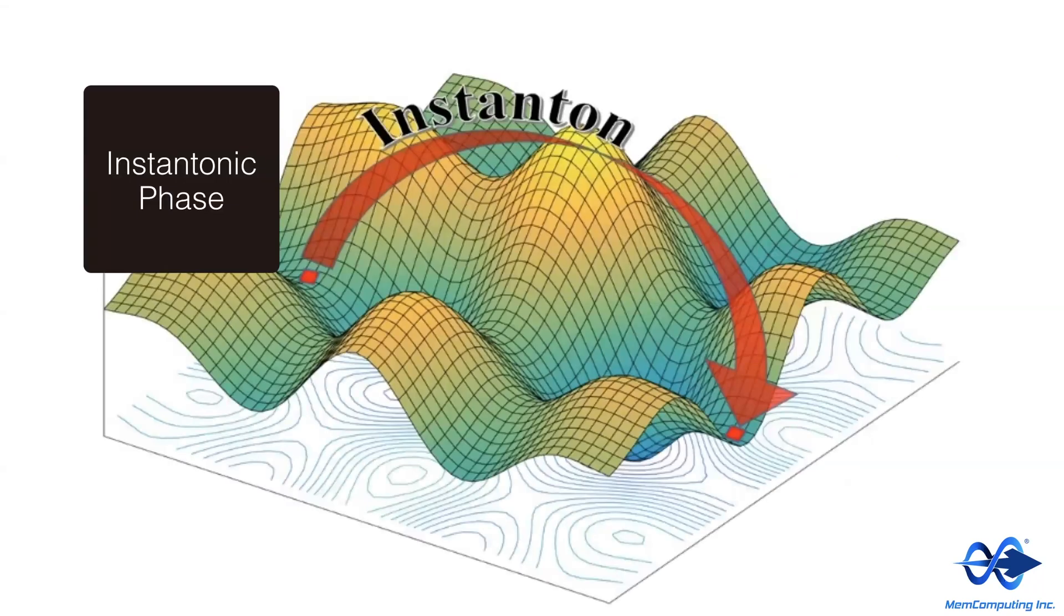We are often asked whether the circuit will get stuck in local minima. The reason is that MEM computing self-organizing logic circuits are designed so that, while solving an equation, they go through a succession of instantons. An instanton is a classical trajectory of the equations of motion of the SOLC that connects critical points in the phase space that have a certain number of unstable directions to critical points that have a smaller number of unstable directions. These points are also known as saddle points.